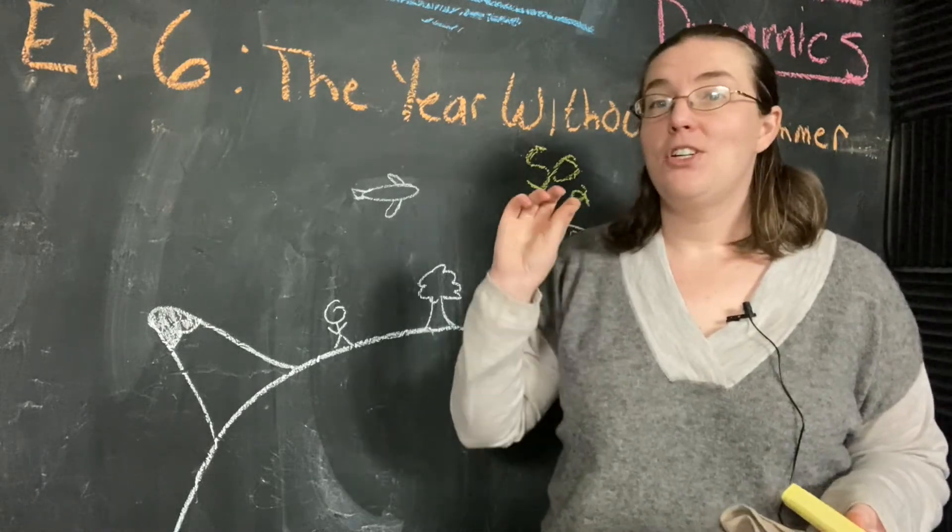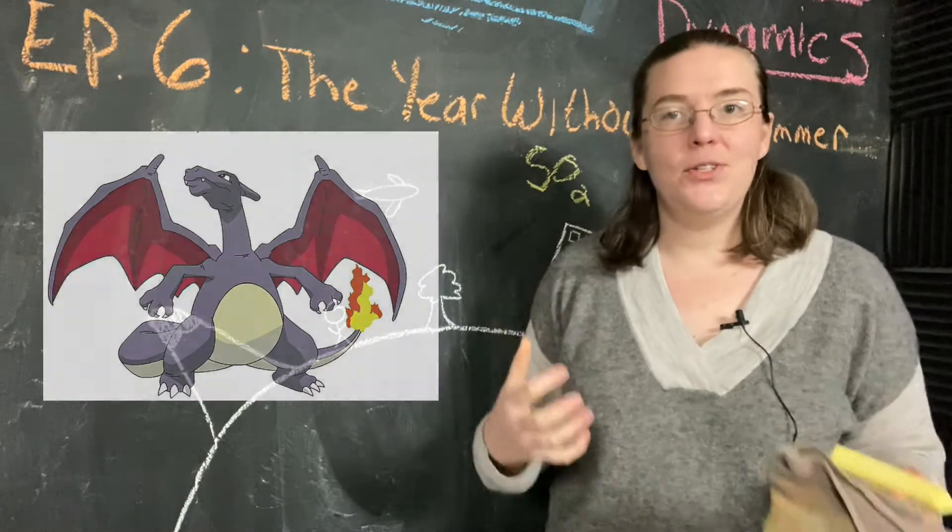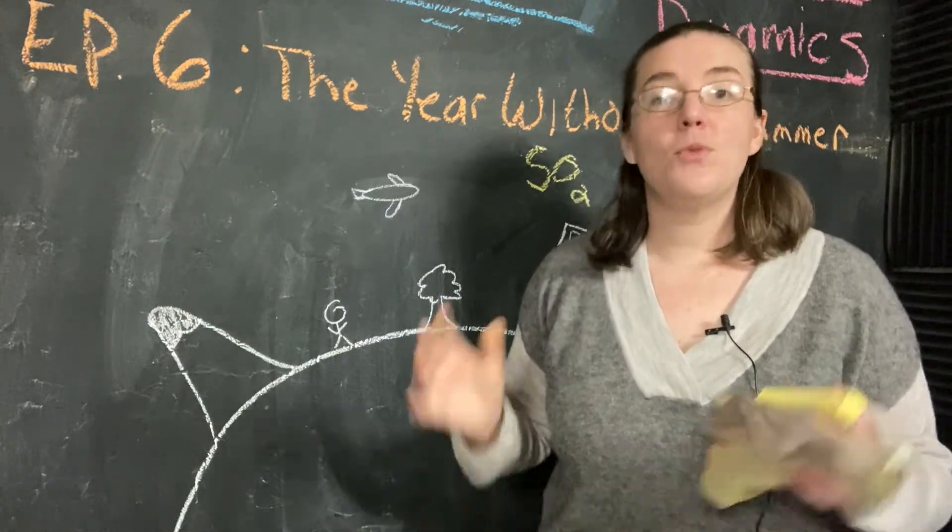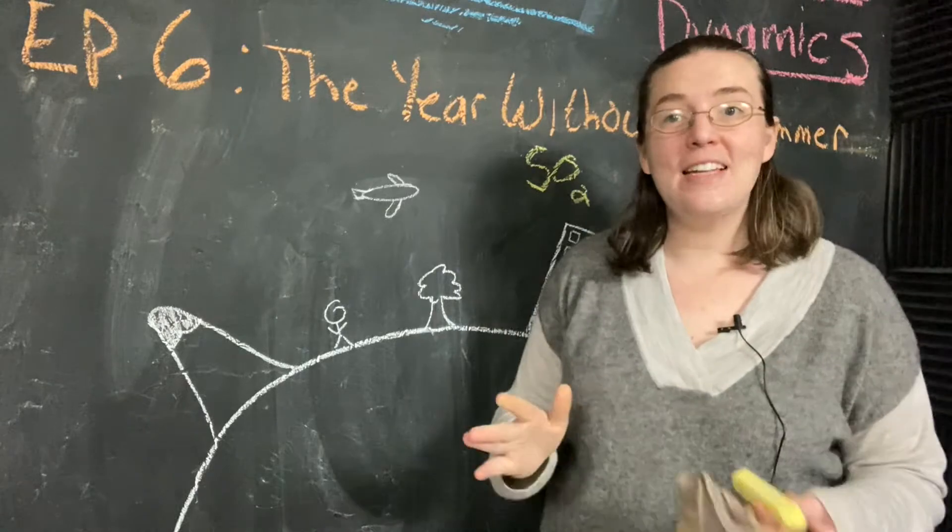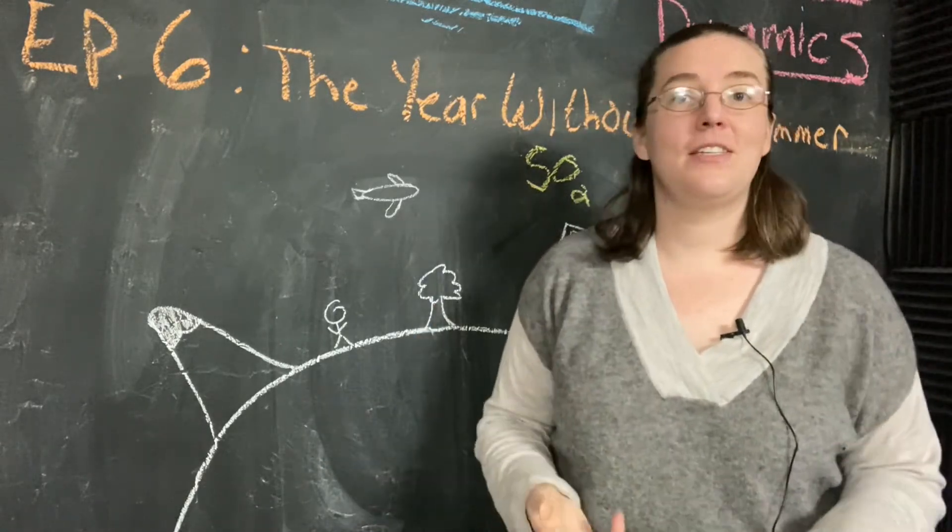The sulfur dioxide is really important for two reasons. One, it's shiny. And two, it was pumped into the stratosphere. So let's talk about those two things and see why that's important and how that caused our year without a summer.